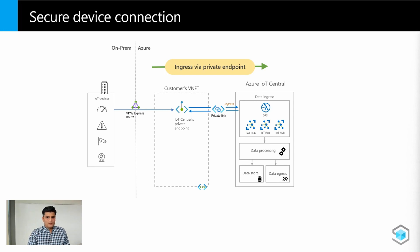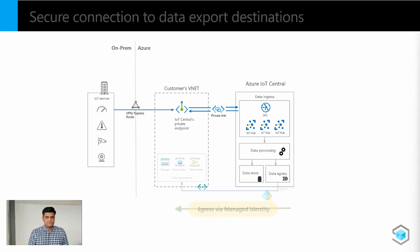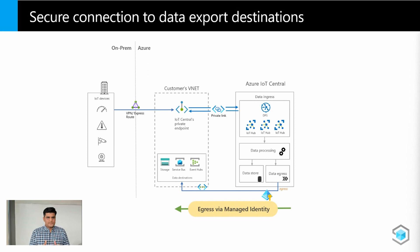Now let's talk about data egress. For an IoT solution, you're not typically stopping at IoT Central — you typically have other data destinations you want to send data to for your business integration needs, powering business analytics workflows, or long-term storage. When you have all of these resources, you have to deal with managing credentials for all of them. Managing credentials comes with its own set of challenges: how do you securely store them, how do you rotate them often? The best way to manage this problem — why not just eliminate the credential altogether?